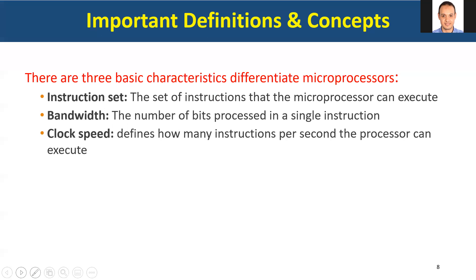To compare processors, we use three main metrics: the instruction set, bandwidth, and clock speed. The instruction set is basically the instructions that a processor can execute, and it differs from one processor to another. Bandwidth is how many bits can be processed at the same time in one instruction. The clock speed defines how many instructions can be executed per cycle or per second — the more clock speed, the faster the execution.